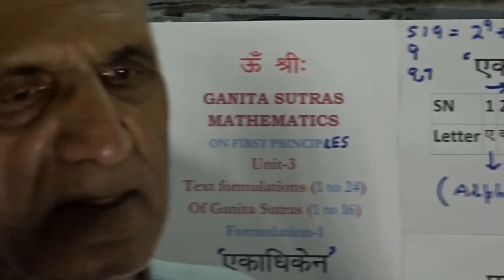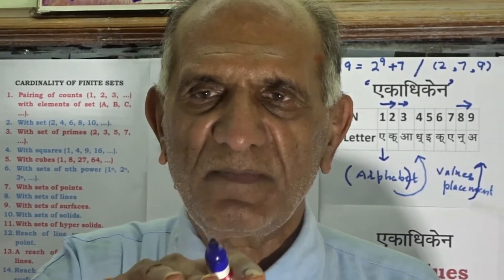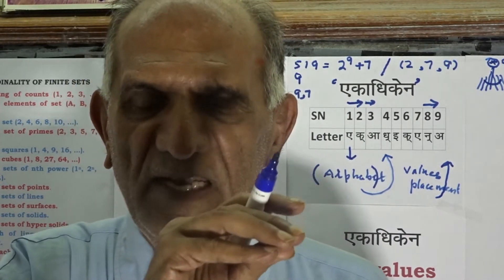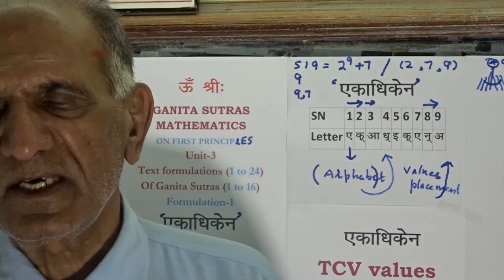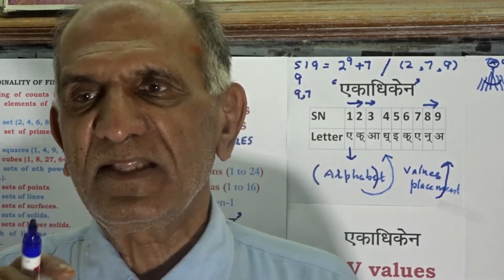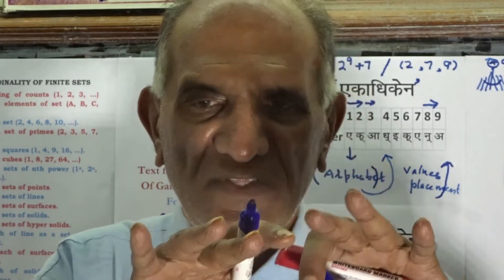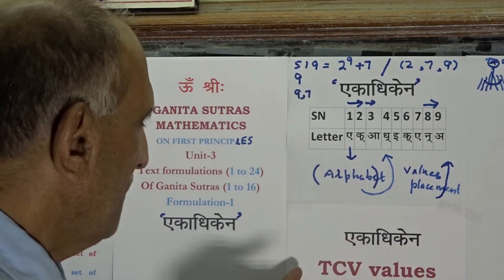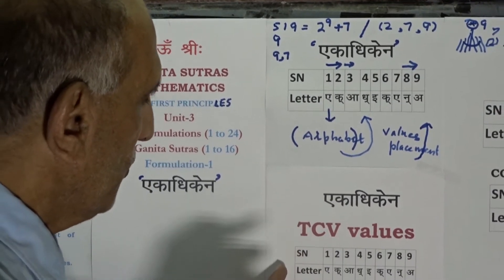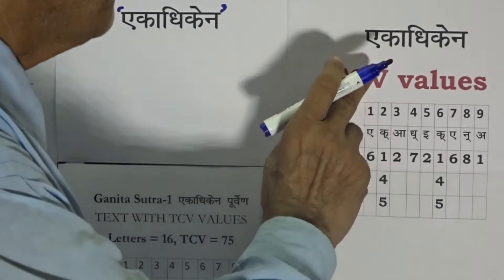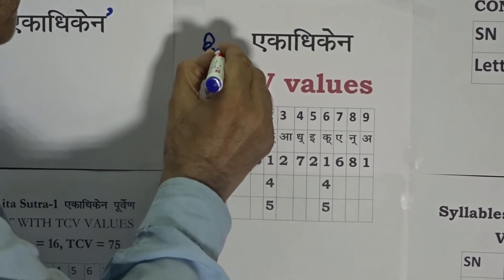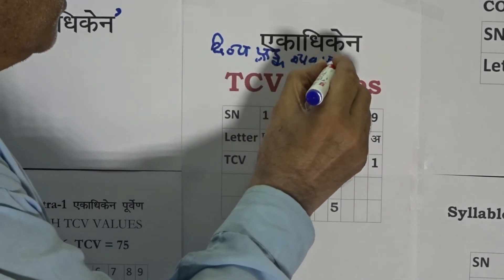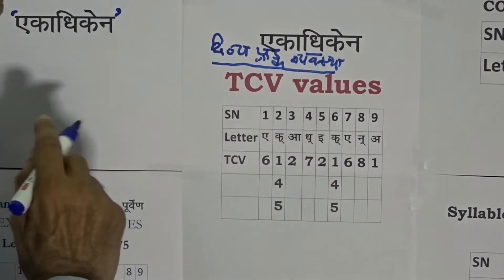Let us revisit the Devanagari alphabet format to have specific conscious attention as to the values accepted by the individual letters and the geometric format accepted by the letters of Devanagari alphabet as per their placement. With this background, let us visit the formulation Eka Adhiken. The first thing to take note of is the TCV values — the transcendental code values, meaning Dive Ankh Vivastha.